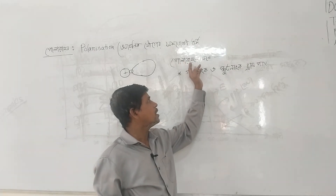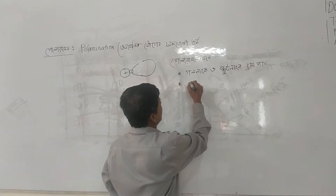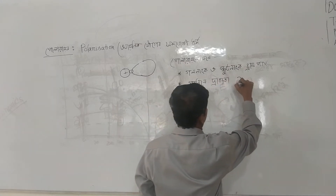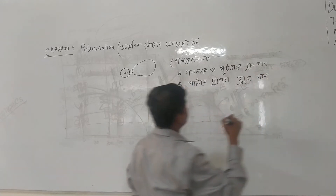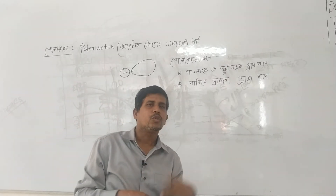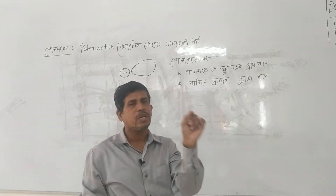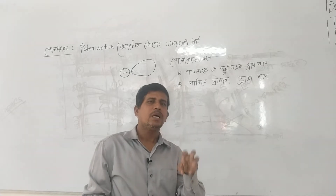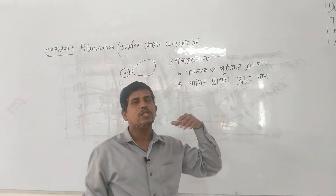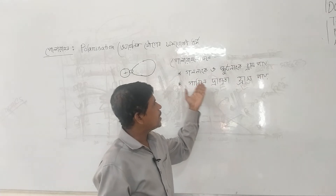First, we have said that polarization affects solubility in water. When the polarization increases, the ionic-covalent character increases, and the compound becomes less soluble in water. The ionic-covalent chemical character increases rapidly.